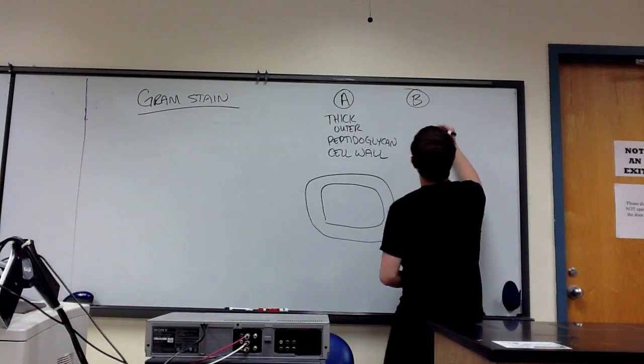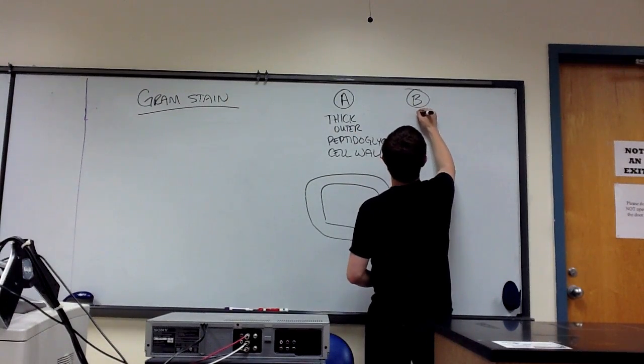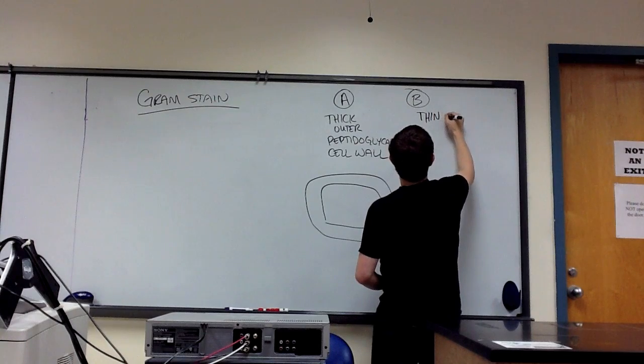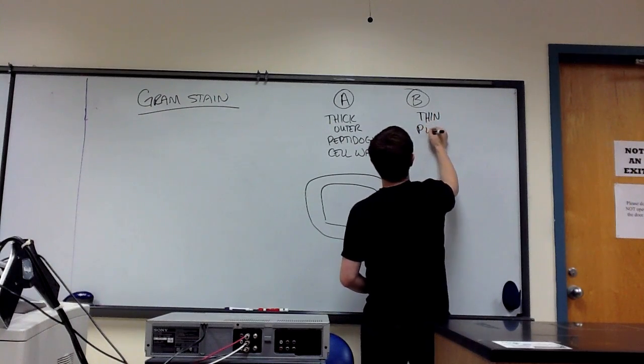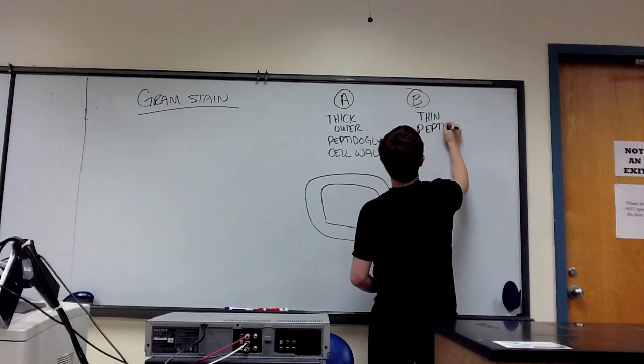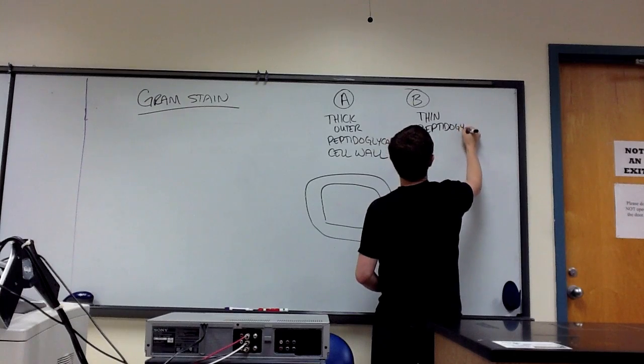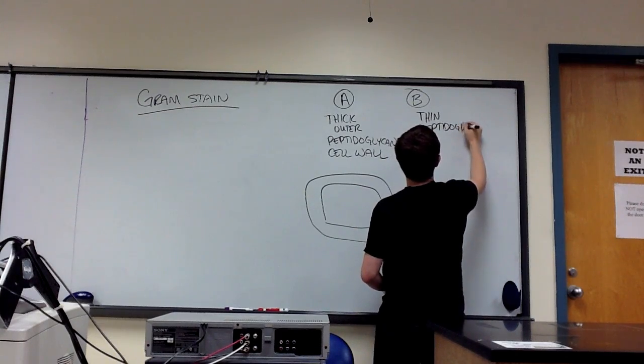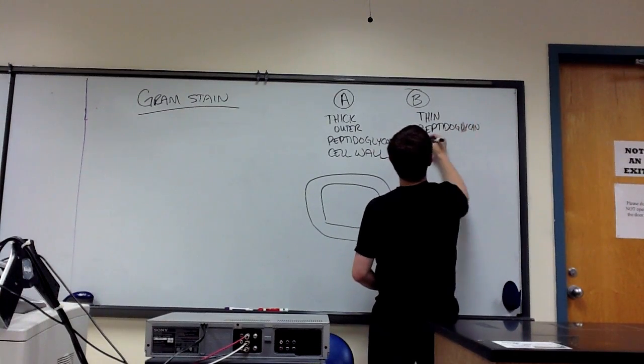The second cell type, denoted as B, is going to have a thin peptidoglycan cell wall.